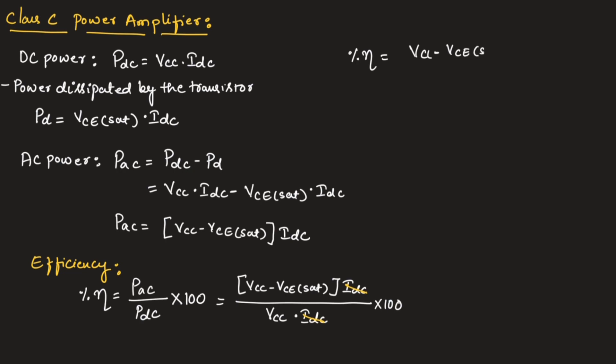We can write percentage efficiency equals 1 minus VCE saturation divided by VCC into 100. Since VCE saturation is very much less than VCC, this term will have very less value. That is why we can say the percentage efficiency will be greater than 90 percent.